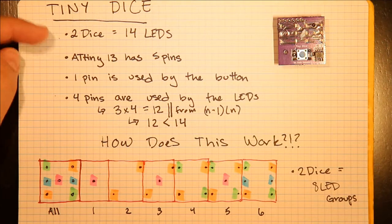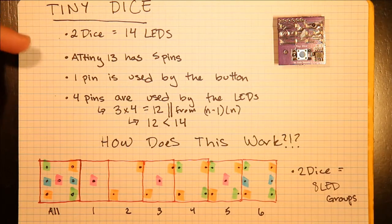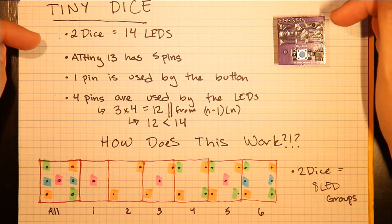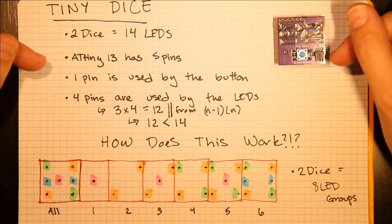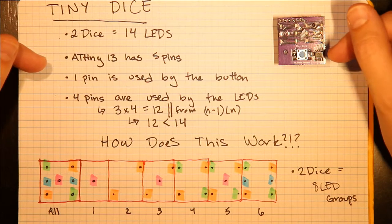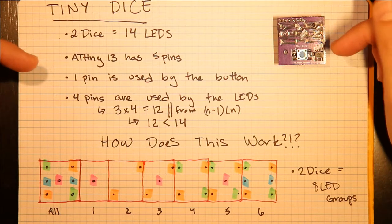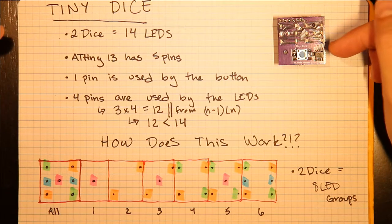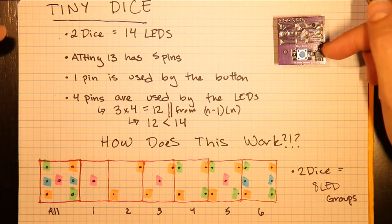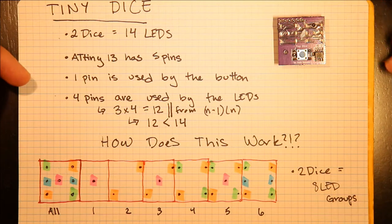Basically, in this dice there are two dice, which means there are 14 LEDs. I'm using an ATtiny13 which has five usable pins, because even though it has eight pins, one is VCC, one is ground, and one is used for reset, leaving me five pins.